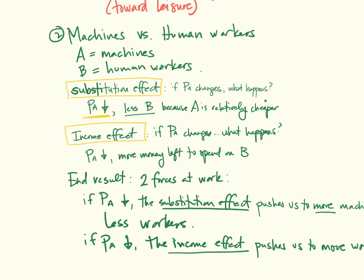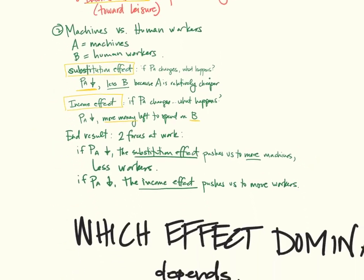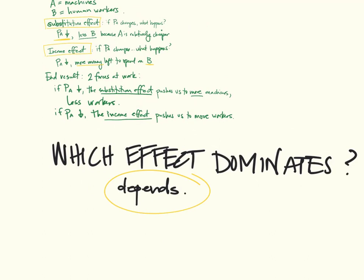But the income effect is also in play. So if machines get cheaper, it's possible, and in many cases very probable, that there's more money left to spend on everything, on research and development, on workers, on opening new branches. So depending on which effect is dominant, we might see an increase in unemployment or a decrease in unemployment. It all depends on which effect dominates. And the answer is, it always depends on the context.